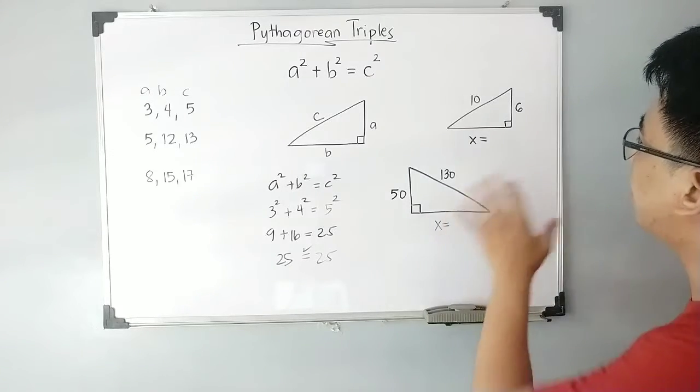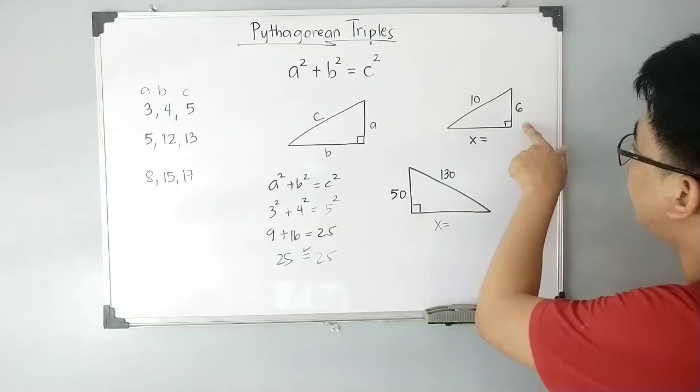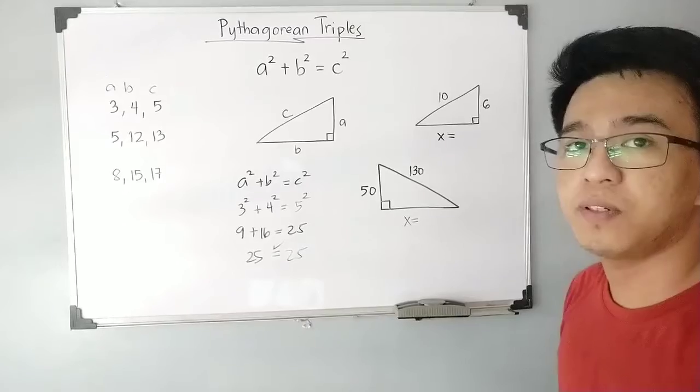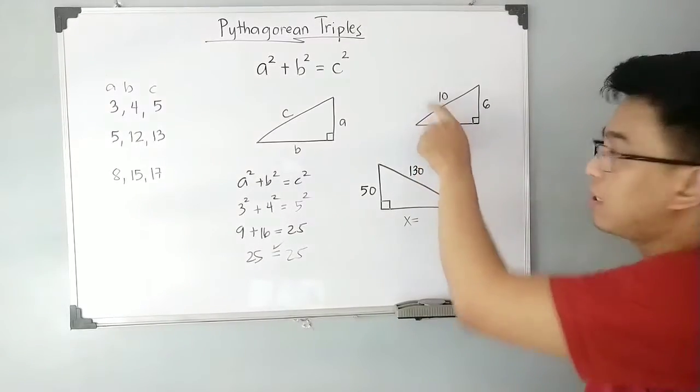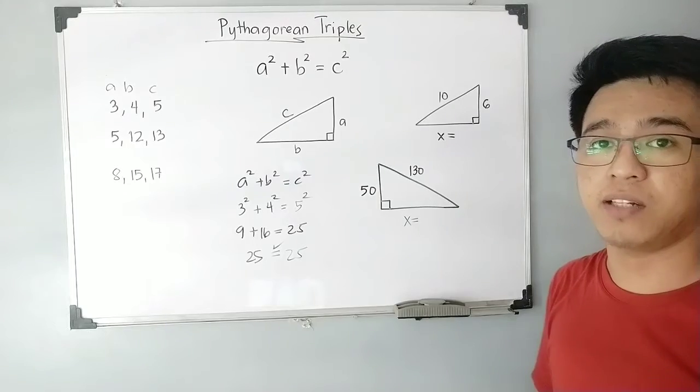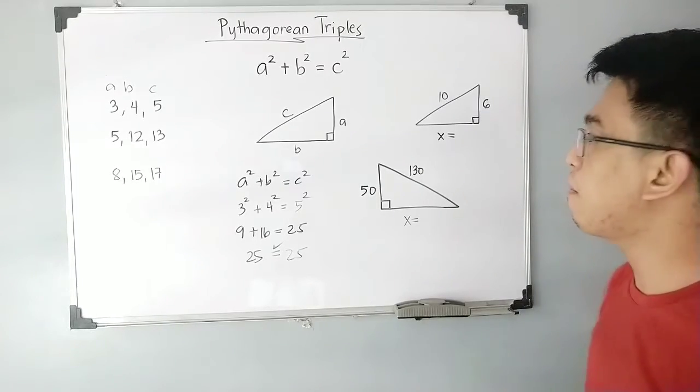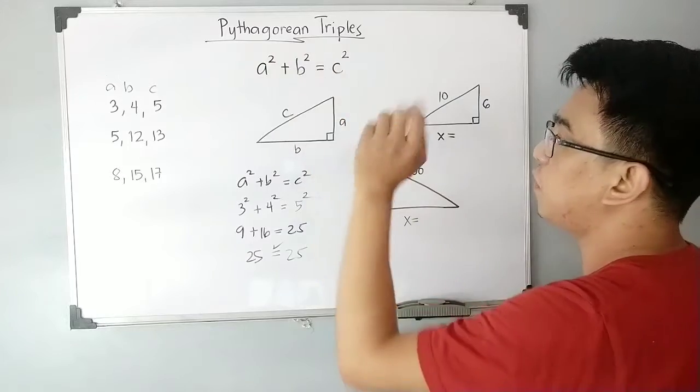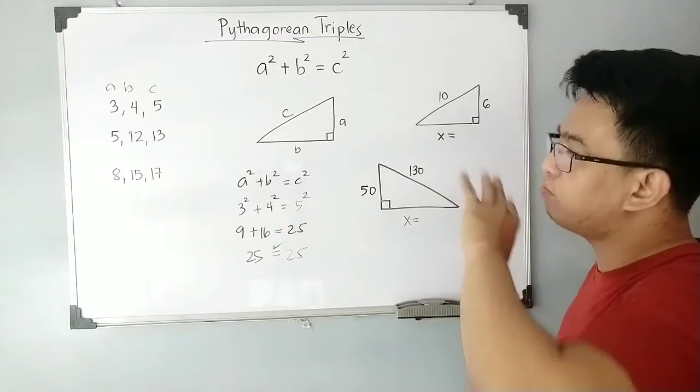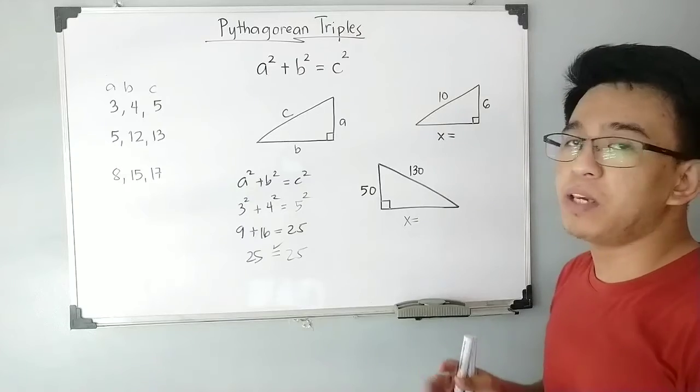As you can see, this right triangle has one leg measuring 6 units, while the hypotenuse measures 10 units. The missing one is the length of the other leg. Now, instead of using this formula...